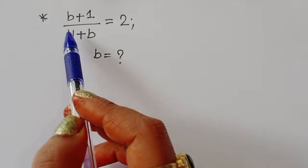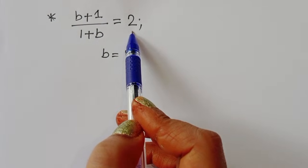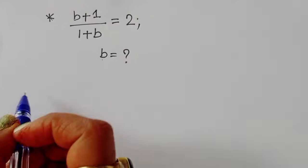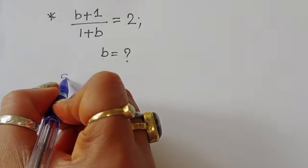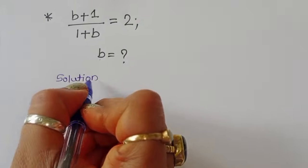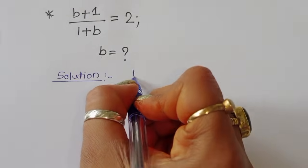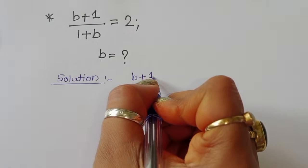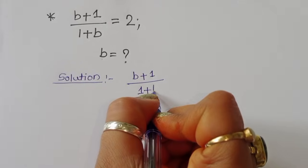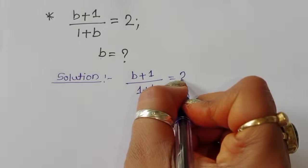The problem is given: (b + 1) divided by (1 + b) is equal to 2. We have to find out the value of b. Let's see the solution. We write b + 1 divided by 1 + b is equal to 2.